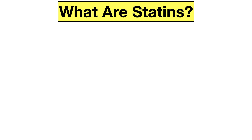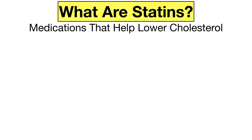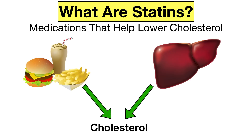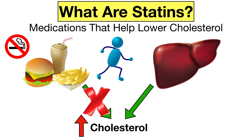As mentioned before, statins are a class of medications that help lower cholesterol, but where does cholesterol come from? Some of the cholesterol in our body comes from the food we eat, but most of our body's cholesterol is actually produced by the liver. When our cholesterol levels are high, we can try to decrease them with lifestyle modifications such as improving our diet, exercising, losing weight, and quitting smoking, among other things.